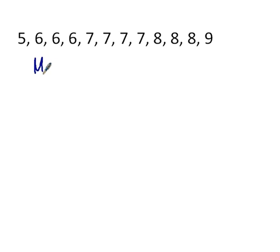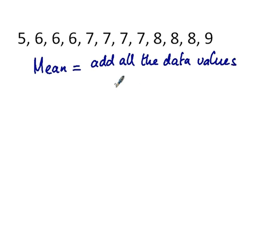To find the mean, you need to add all the data values. So that means add all the numbers in the list and then divide that sum by the number of data values.